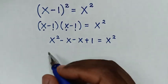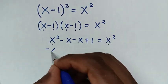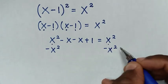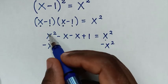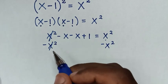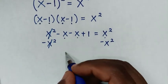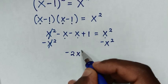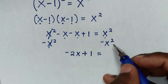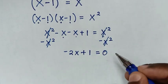In the next step, x squared appears on both sides, so we subtract x squared from both sides. x squared minus x squared is 0, so those cancel. We are left with negative x minus x, which is negative 2x, plus 1 equals 0.